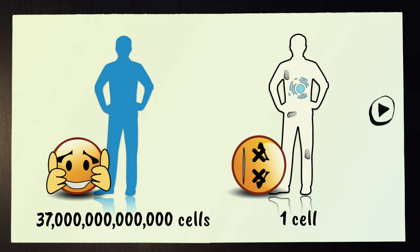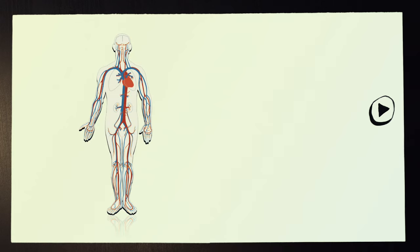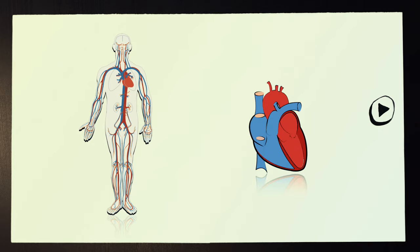This is the reason why we have a circulatory system with a really strong pump—the heart—constantly shifting nutrients in the blood throughout our body.